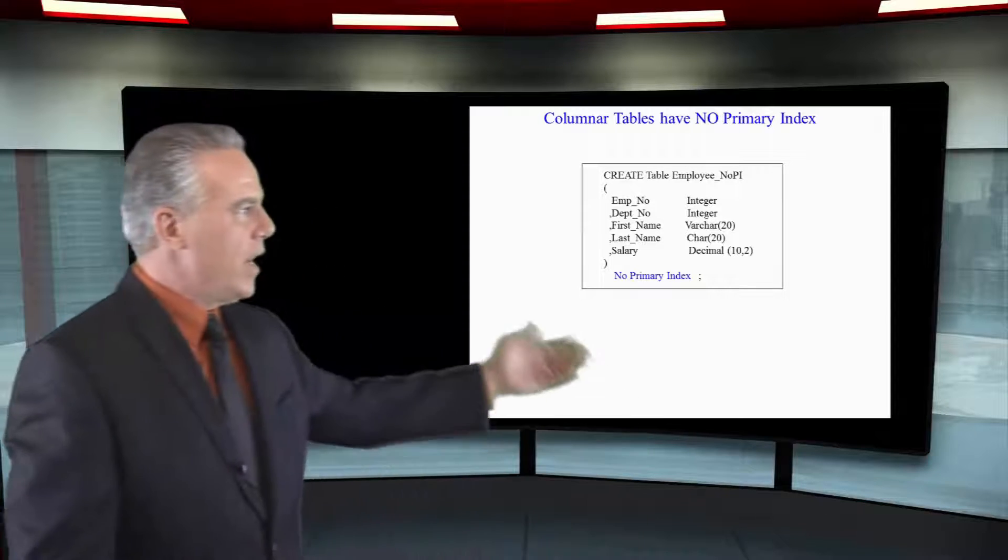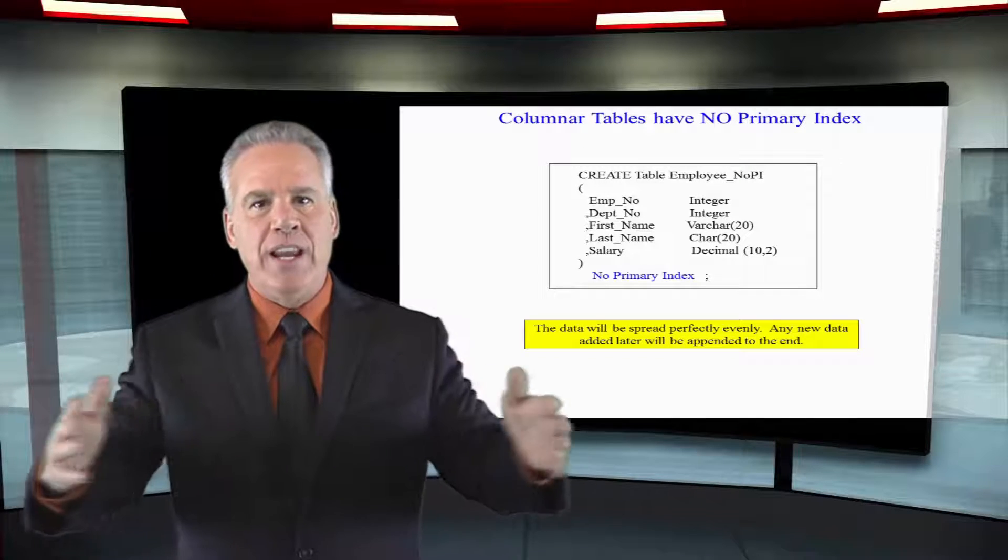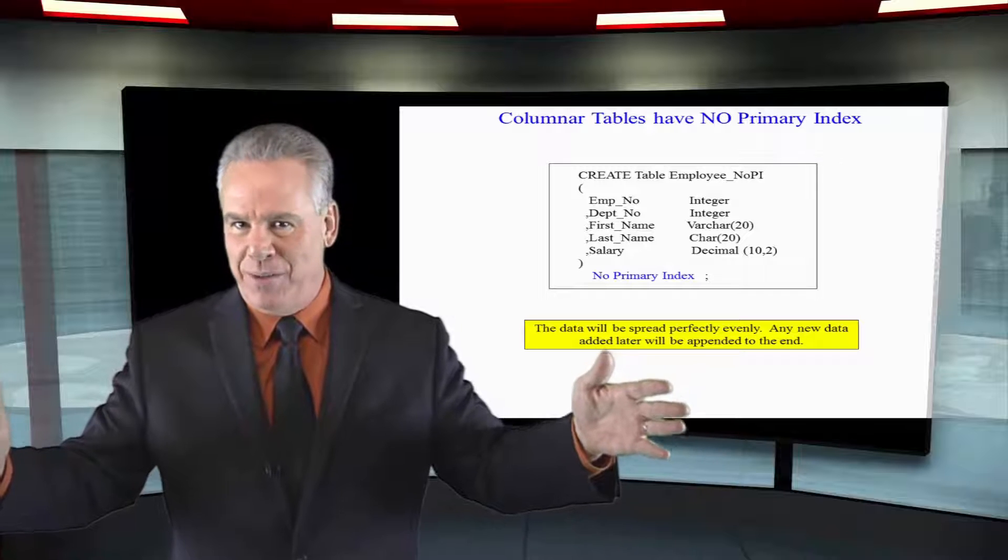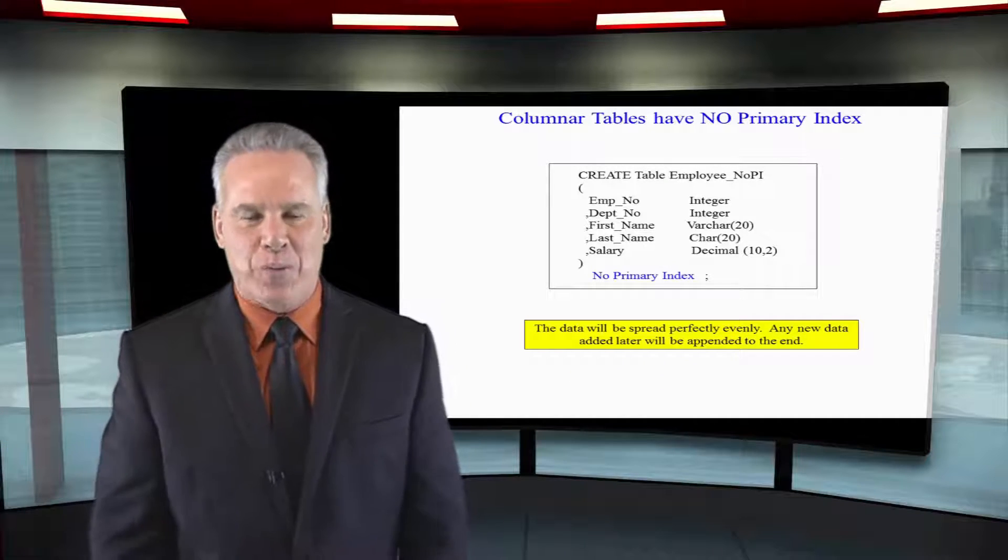Let's take a look right here. As you can see we've created our table and it's got our columns and our data types and we're saying no primary index. This will spread the data evenly but randomly and that's what a no PI is, no primary index.